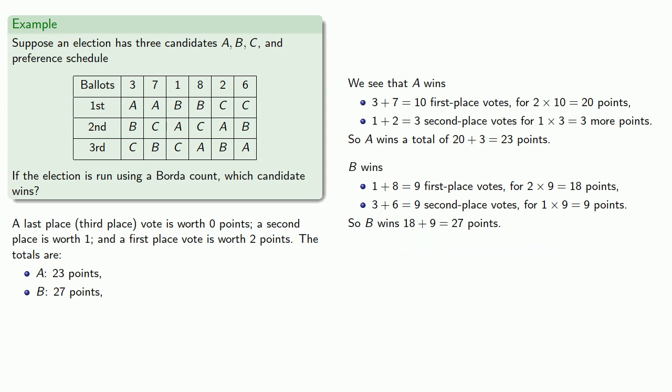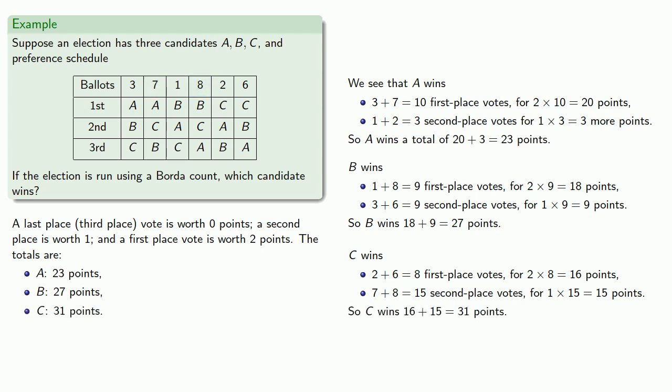And finally, C wins first place votes from these voters, two plus six, eight first place votes for sixteen points. And these voters here and here gave C second place votes, that's fifteen second place votes for fifteen more points, and so altogether C wins thirty-one points. And the winner of the Borda count is the candidate which scores the most points, and that's going to be C. And so C wins if we use the Borda count.